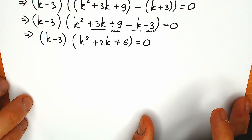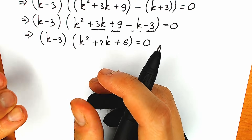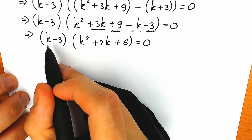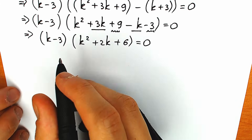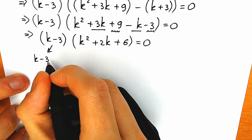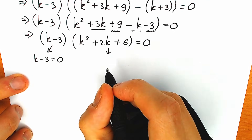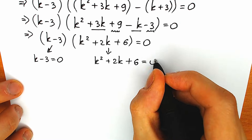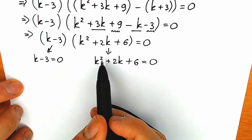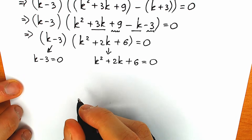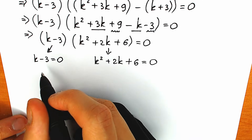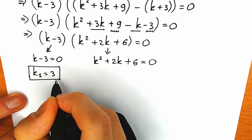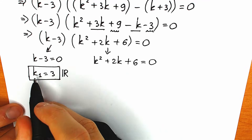We have a product of two parentheses: k minus 3 times k squared plus 2k plus 6 equal to zero. A product of two parentheses equals zero when the first parenthesis is zero, so k minus 3 equals zero, or the second parenthesis is zero: k squared plus 2k plus 6 equals zero. From the first branch, instantly: k₁ equals 3. This is our real number root.